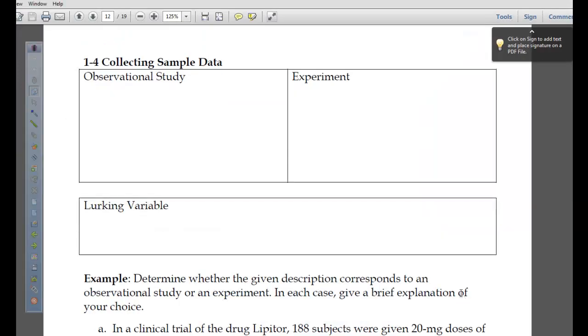Lurking variable is one that is in the background and it makes two things seem like they're related, but they're really tied to this lurking variable. We talked about this with the ice cream and the swimming accidents. Temperature was the lurking variable. A variable that's not being considered that really is the tie or link between two variables that have correlation, seem to have a correlation.